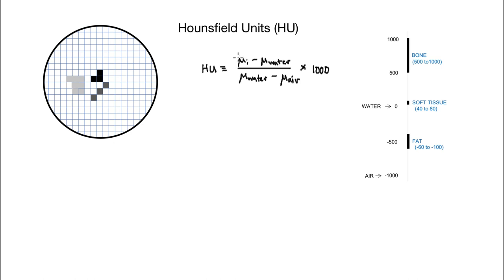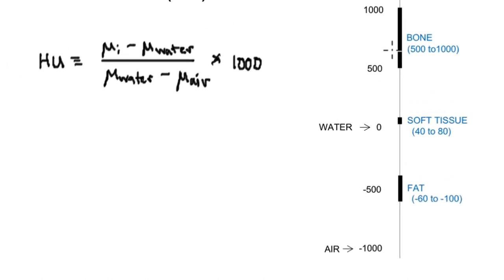If we're dealing with air, the linear attenuation coefficient is very close to zero. So you get zero minus water divided by water minus zero — that becomes minus one, giving you minus a thousand. Then it scales up. Bone ranges between roughly 500 and a thousand. Soft tissue is 40 to 80. Fat, which is less dense, has a lower Hounsfield unit, somewhere between minus 60 to minus 100.